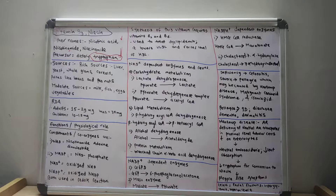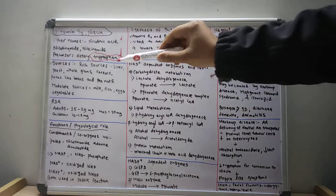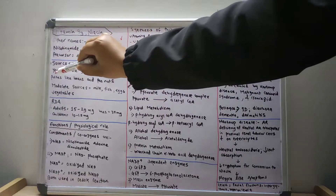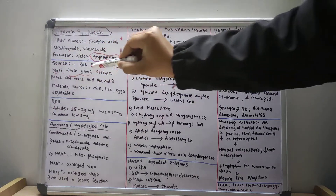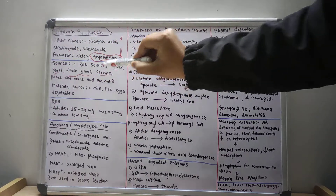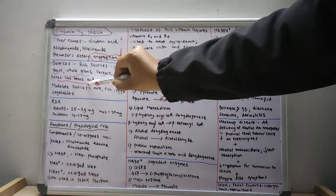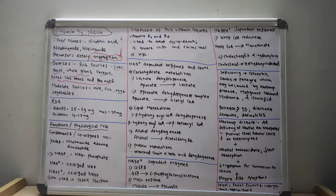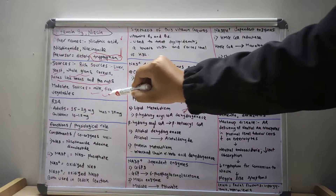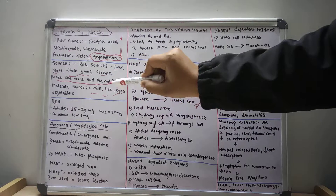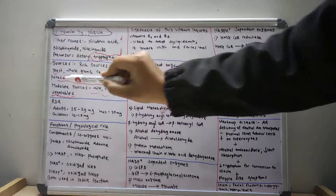Now let us discuss the various sources of vitamin B3. The rich sources are liver, yeast, whole grains, cereals, and pulses like beans and peanuts. The moderate sources are milk, fish, eggs, and vegetables.